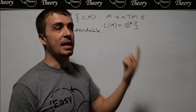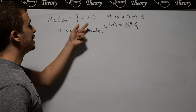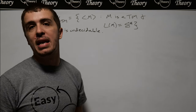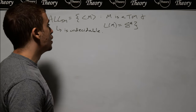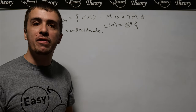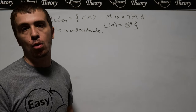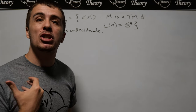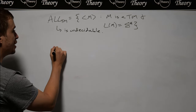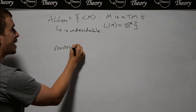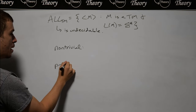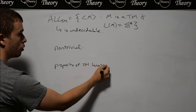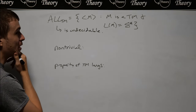I want to apply Rice's theorem to this language, which is called all-TM — the set of all Turing machine descriptions such that the language of the machine is sigma star, meaning it accepts every single string. Famously you can show this is undecidable via a reduction from the emptiness problem or the acceptance problem for Turing machines. But I want a much easier proof via Rice's theorem. To apply Rice's theorem, we need to show this language is a non-trivial property of Turing machine languages. I'll break it into two stages.